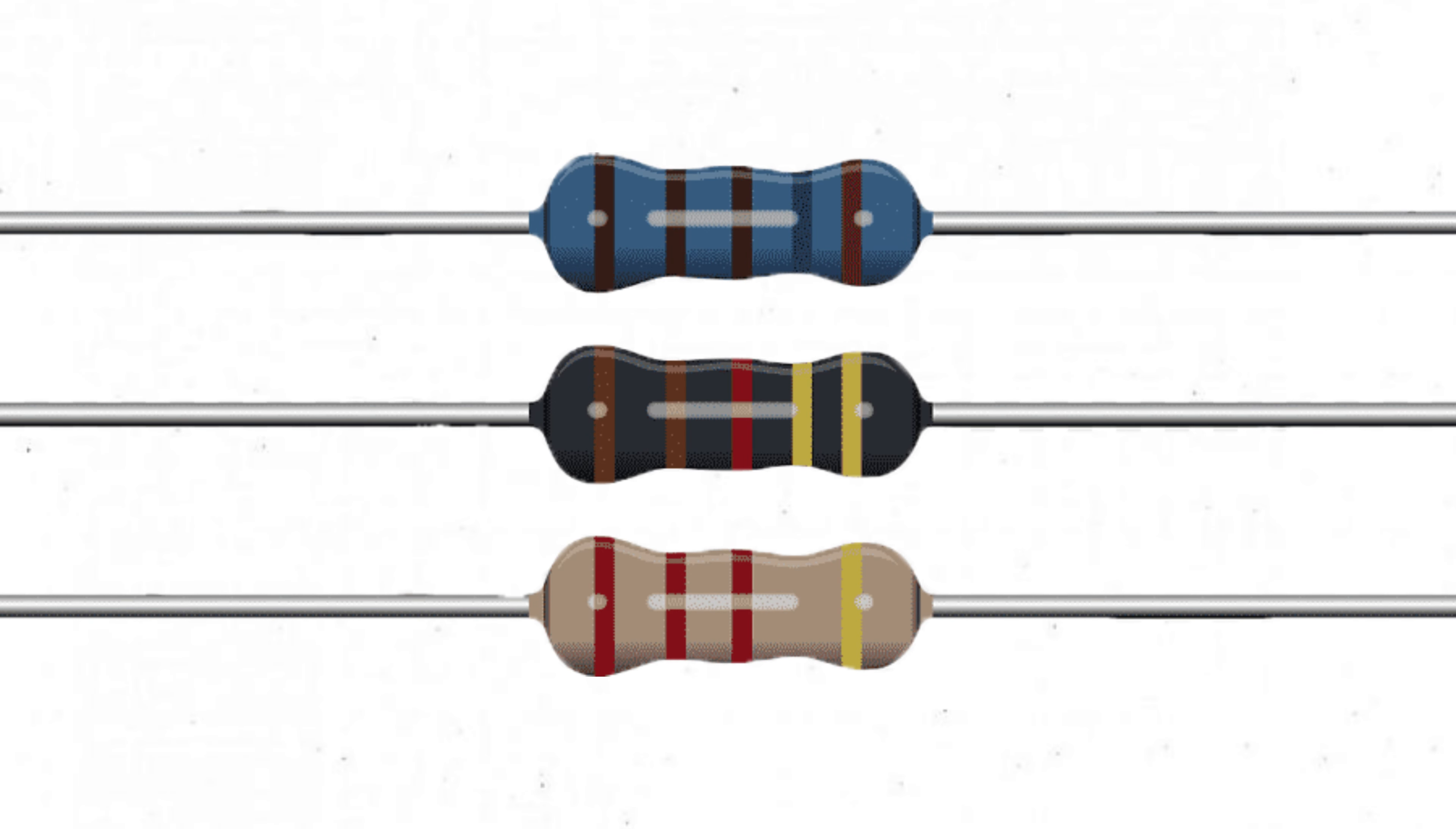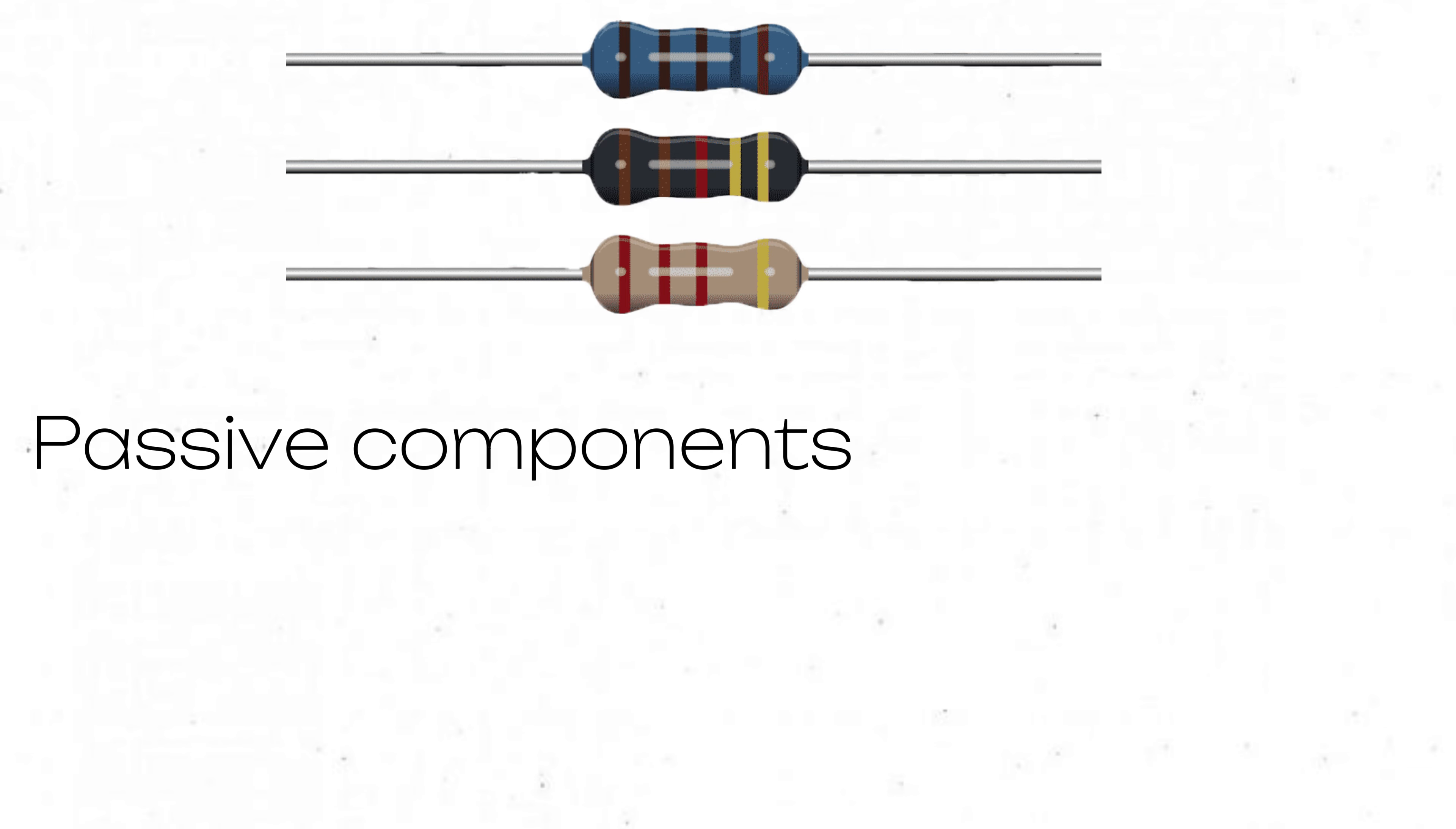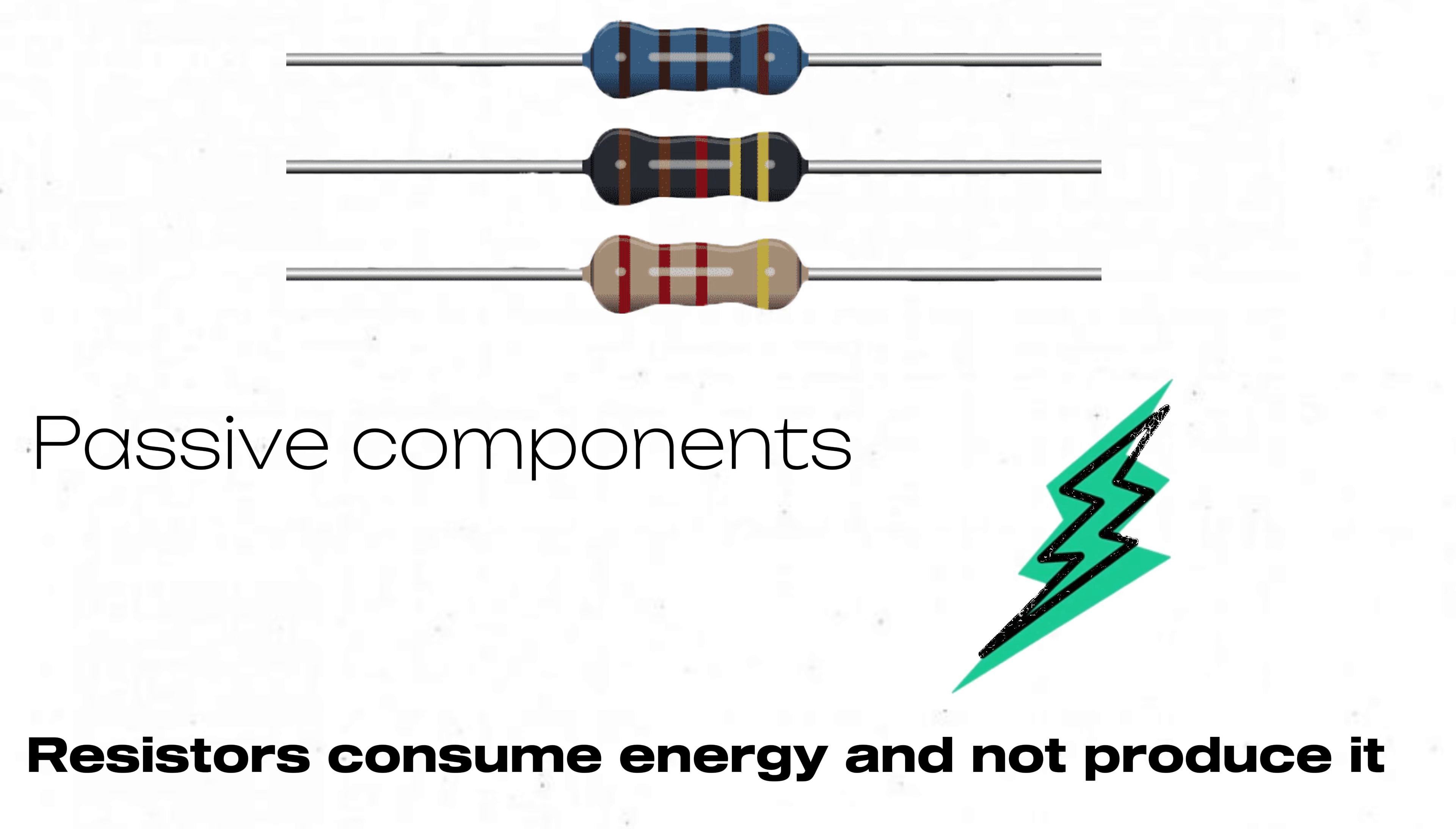In this video we will discuss resistors and different ways in which they can be connected. Resistors are passive electrical components that limit the flow of current. They are called passive because they consume energy rather than producing it.